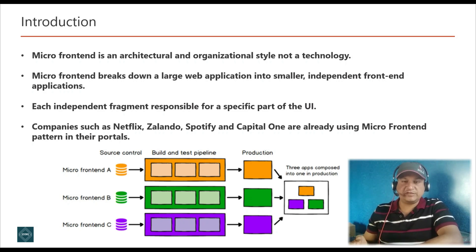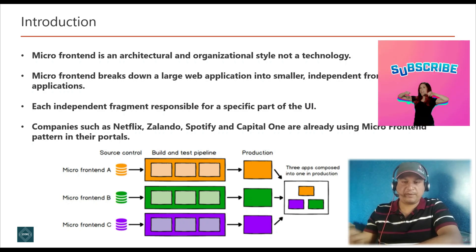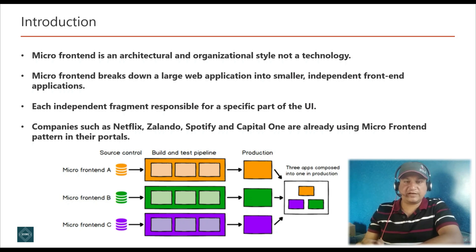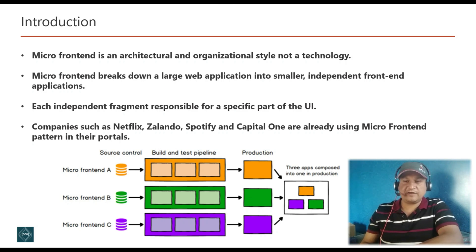With micro front-end, no single team owns the UI in its entirety. Instead, every team owns a piece of the screen, page, or content — for example, one team might be responsible for a search box while another handles suggestions based on user preferences. Companies like Netflix, Zalando, Capital One, and Spotify are already using micro front-end. The main challenge is creating fast rendering on the client, but server-side rendering offers a workaround with faster performance and more accessible content.